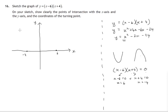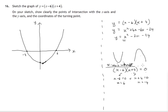We can now sketch in that parabola. The remaining features are the minimum turning point and the y-axis intercept. That was the x-axis intercept we worked out, where y was equal to 0. For the y-axis intercept, we set the other variable to 0 — we set x equals 0.